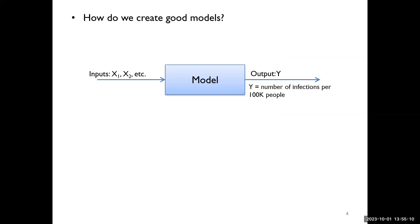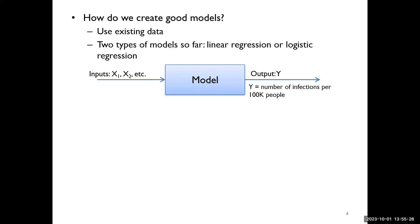We want models with high predictive power for Y, so we have to decide which parameters — X1, X2, X3, however many there are — are important in determining Y, our output or dependent variable. We use existing data to create these models. There are only two types of models covered so far: linear regression and logistic regression. They work very similarly — it really comes down to the nature of the output variable we're trying to predict.